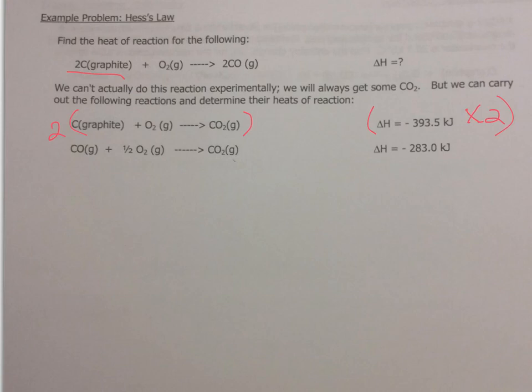The second thing I notice is that I need carbon monoxide as a product, not a reactant. So I'm going to rewrite the second equation: CO2 gas gives me CO gas plus one half O2 gas. But I also have to change the sign of the delta H because I reversed that equation.